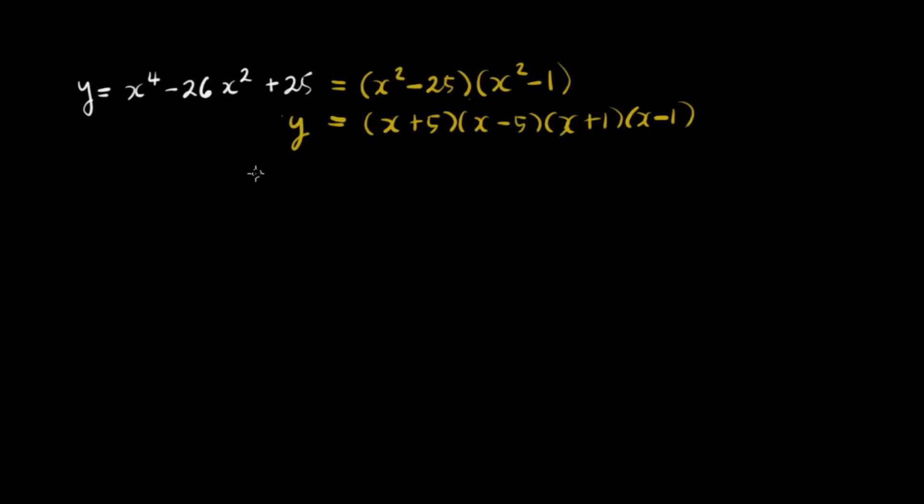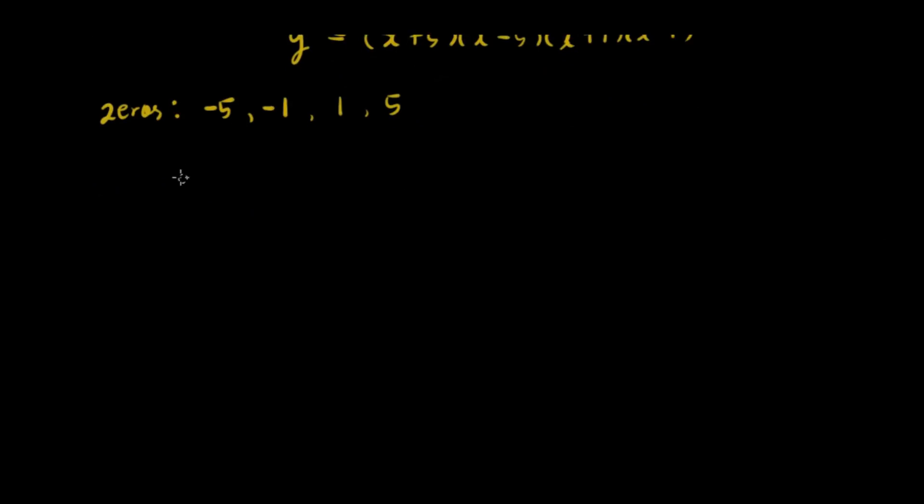Now we're ready to construct our table of signs. So the zeros are, we have negative 5, x plus 5 gives negative 5. We also have negative 1, we have positive 1, and we have positive 5. Now let's construct our table of signs.